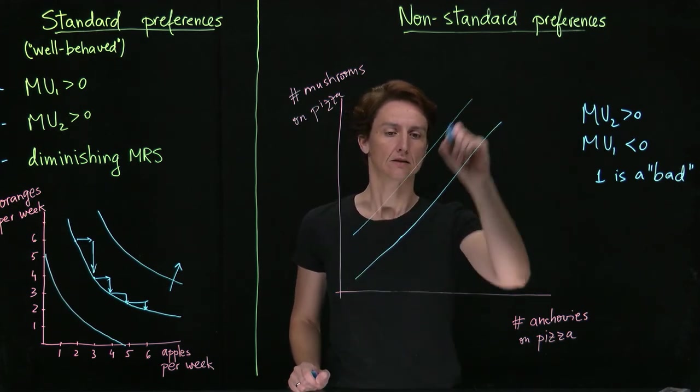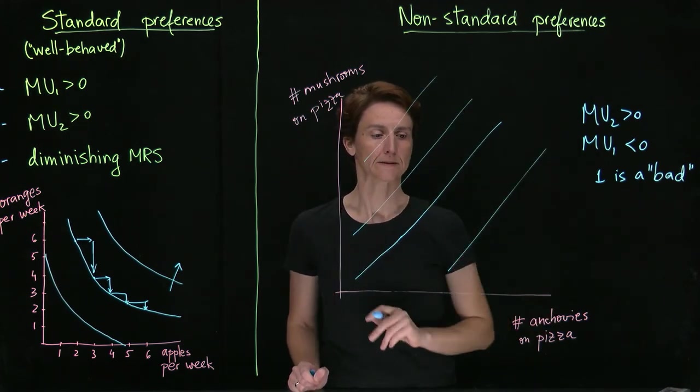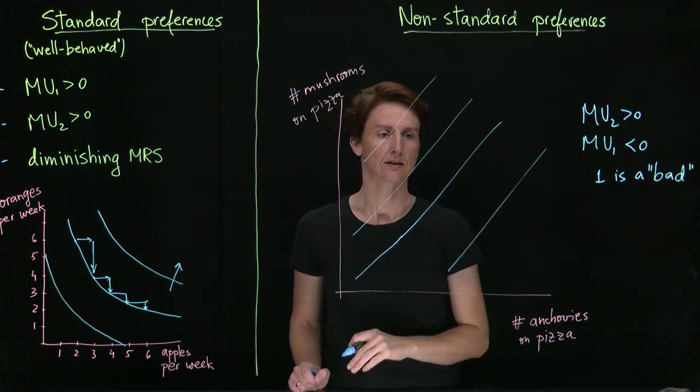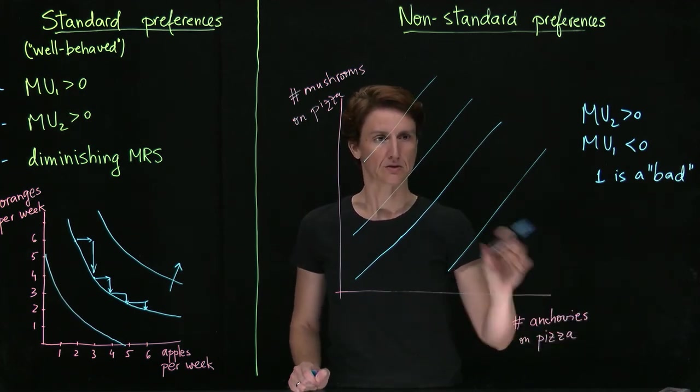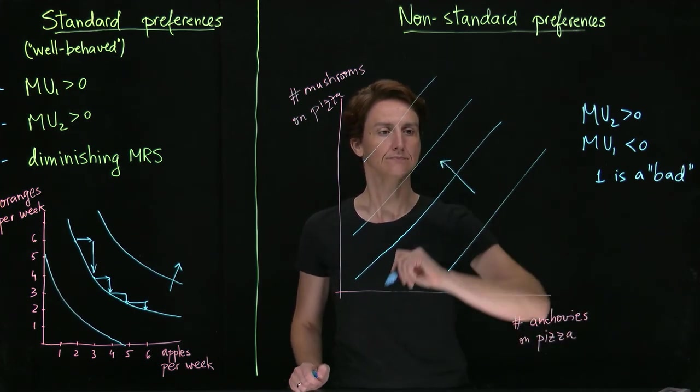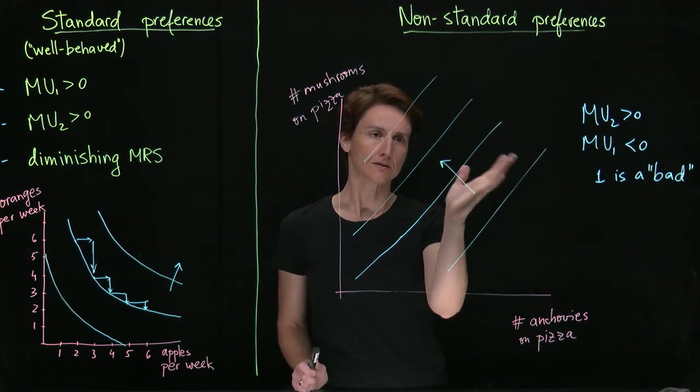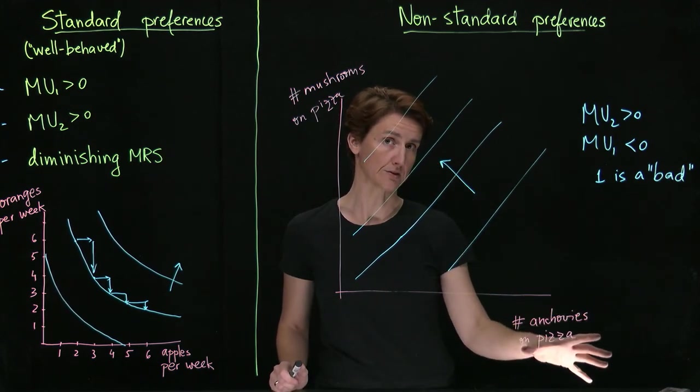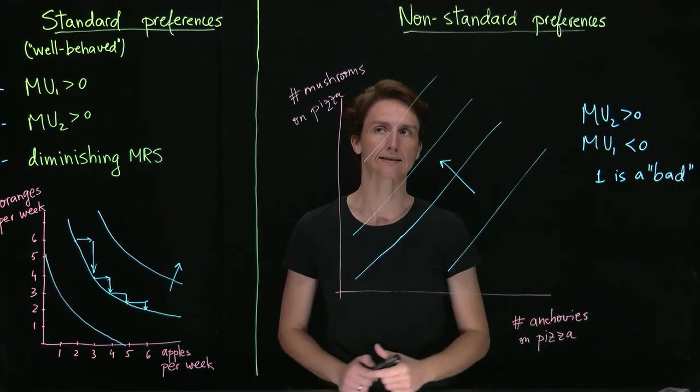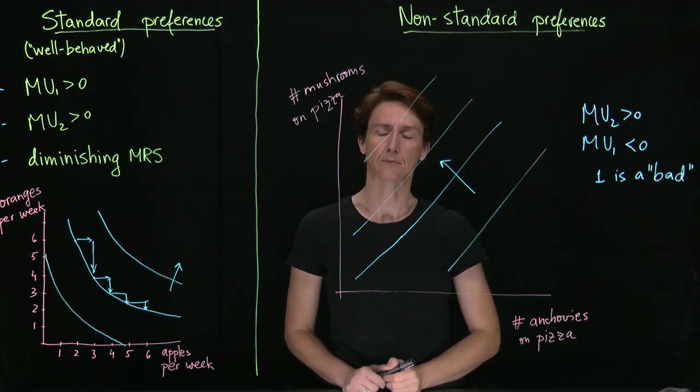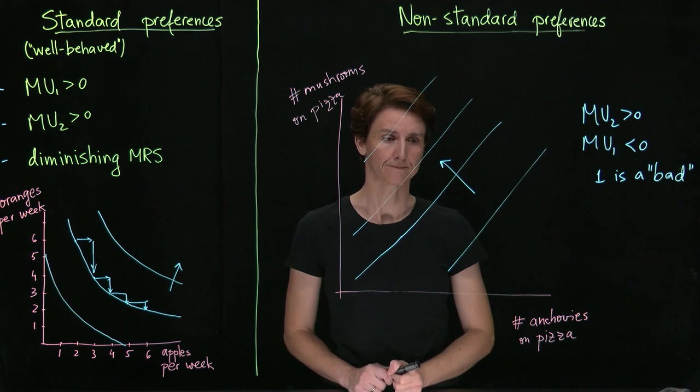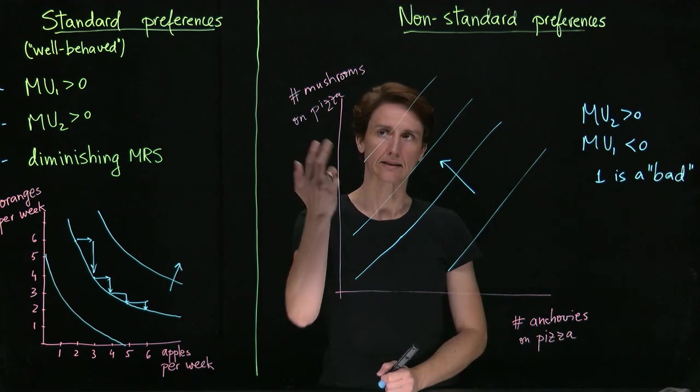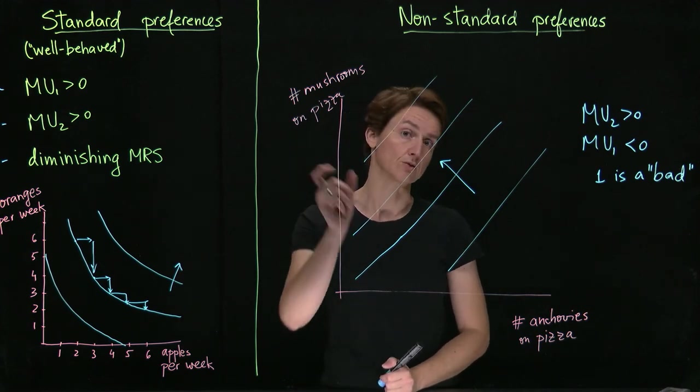And so in this case, indifference curves would be upward sloping. In particular, you want to be careful to mark the direction of utility increase. Here, it's going to be away from anchovies. So upward sloping indifference curves with utility increasing going up and to the left means that you have negative marginal utility of the good on the horizontal axis and positive marginal utility of the good on the vertical axis. If instead the arrow were to point the other way, that would indicate the consumer with negative marginal utility of mushrooms.